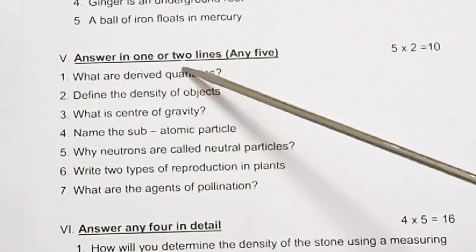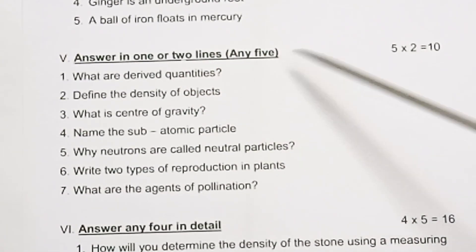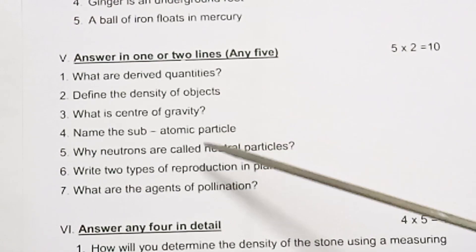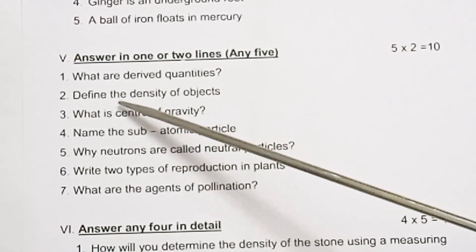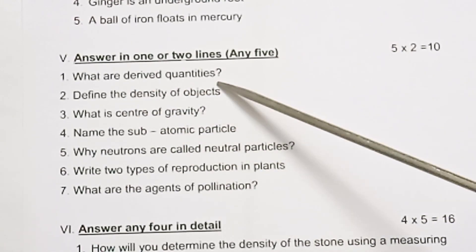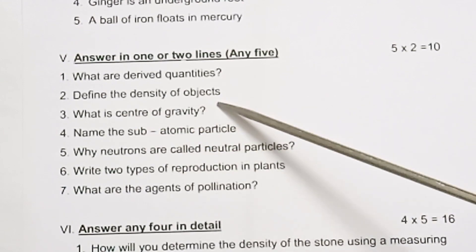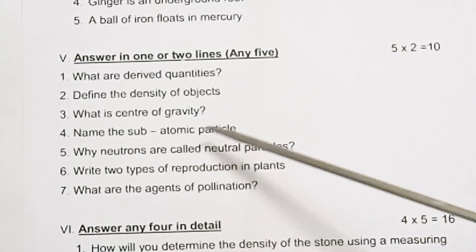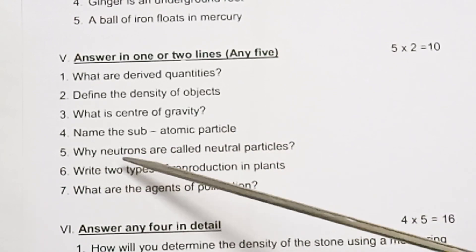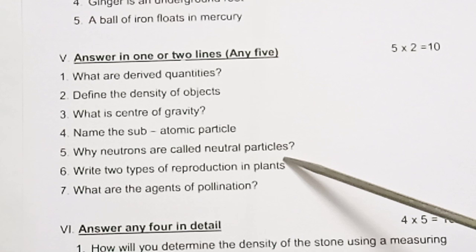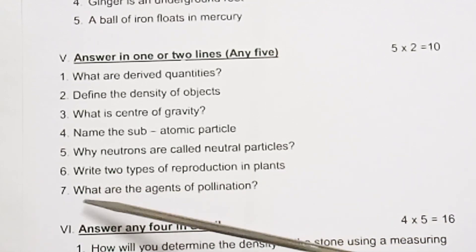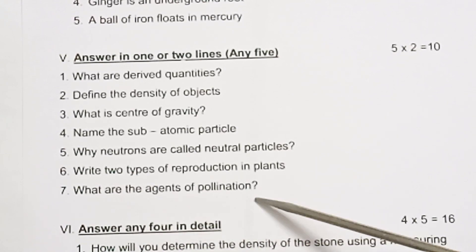Format 5: Answer in one or two lines, any 5, 5 into 2 equals 10. First one: What are derived quantities? Second one: Define the density of objects. Third one: What is the center of gravity? Fourth one: Name the subatomic particle. Fifth one: Why neutrons are called neutral particles. Sixth one: Write two types of reproduction in plants. Seventh one: What are the agents of pollination?